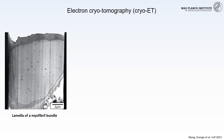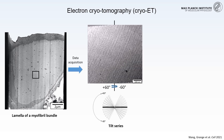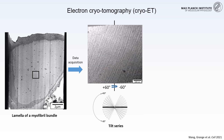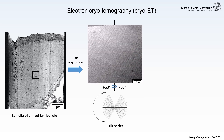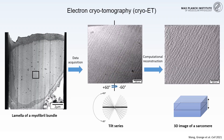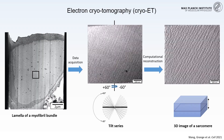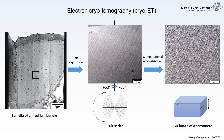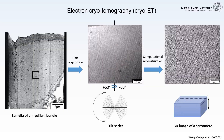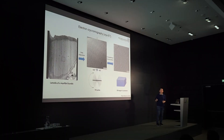This lamella can be transferred into a transmission electron microscope and imaged at very high magnification. We acquired projection images of the same region at different orientations. These series of projection images can be computationally back-projected to reconstruct a three-dimensional volume. This approach is called electron cryo-tomography, or cryo-ET.